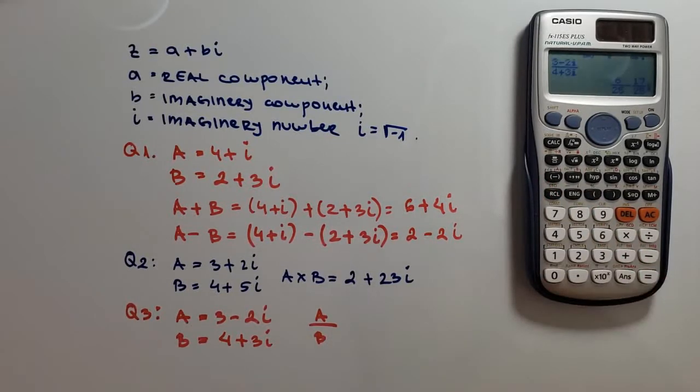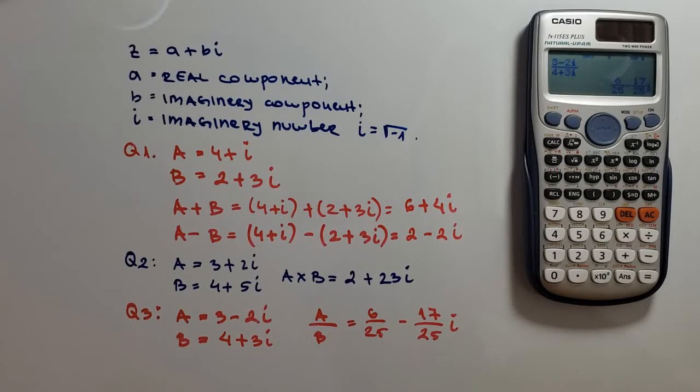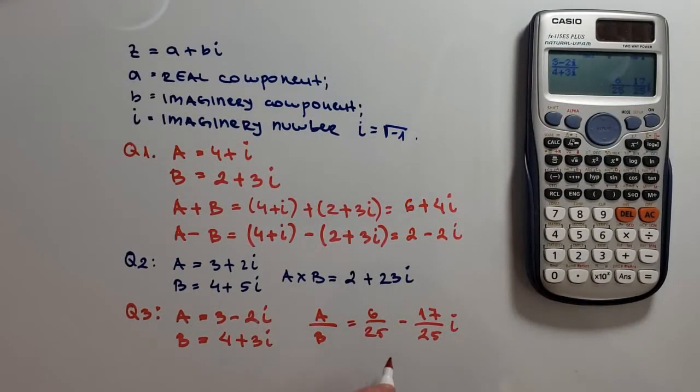This is equal to 6 over 25 minus 17 over 25i. Here, we have a common factor, and we can take that out. And we have 1 over 25 times 6 minus 17i.